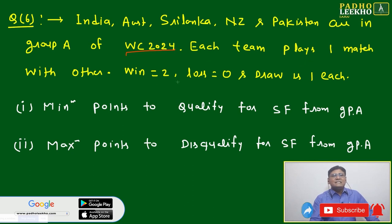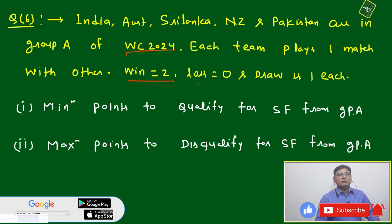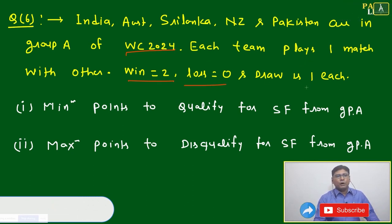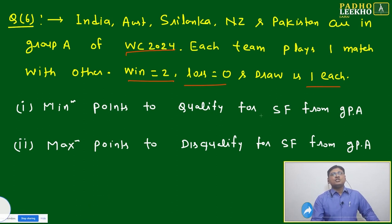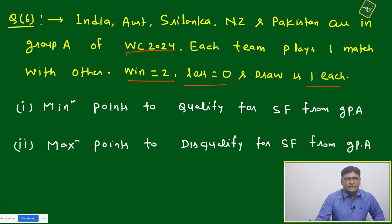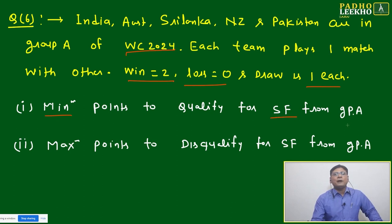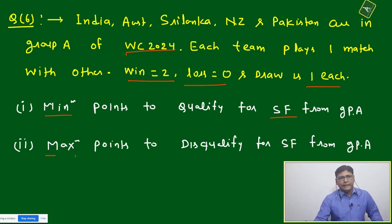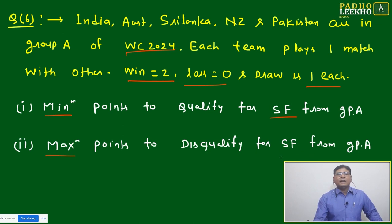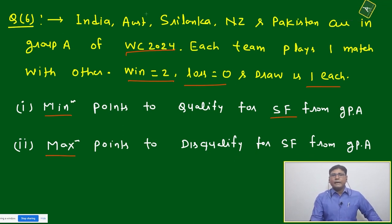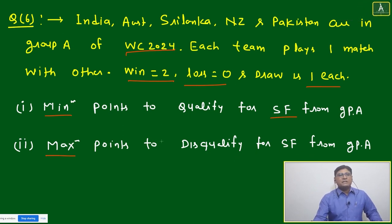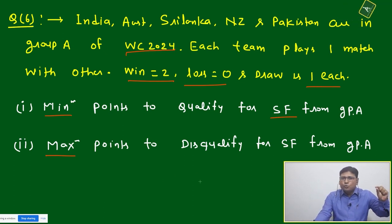Each team plays one match with every other team. Winning gets two points, a loss gets zero, and a draw gets one point each. The question asks for the minimum points to qualify for the semi-final from Group A, and the maximum points a team can get and still be disqualified. To qualify for the semi-final means being in the top two teams.